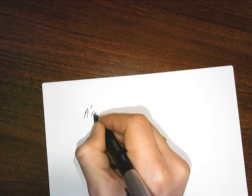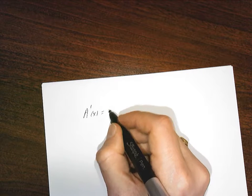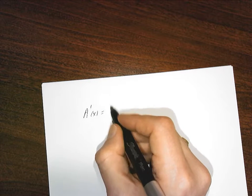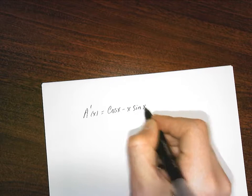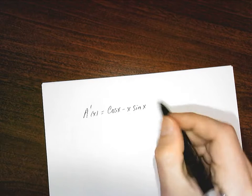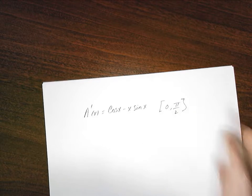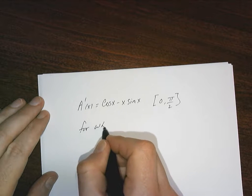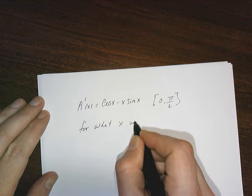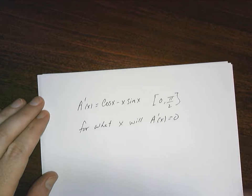The question was: the derivative of the area of this particular function was cos(x) - x*sin(x) and we knew that it was on an interval of [0, π/2]. We wanted to determine for what x will A'(x) equal zero.